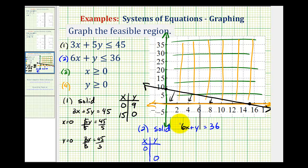Notice if x is equal to zero, we would just have y equals 36. And then notice if y is equal to zero, we would just have 6x equals 36. We divide both sides by 6, and we have x equals 6.